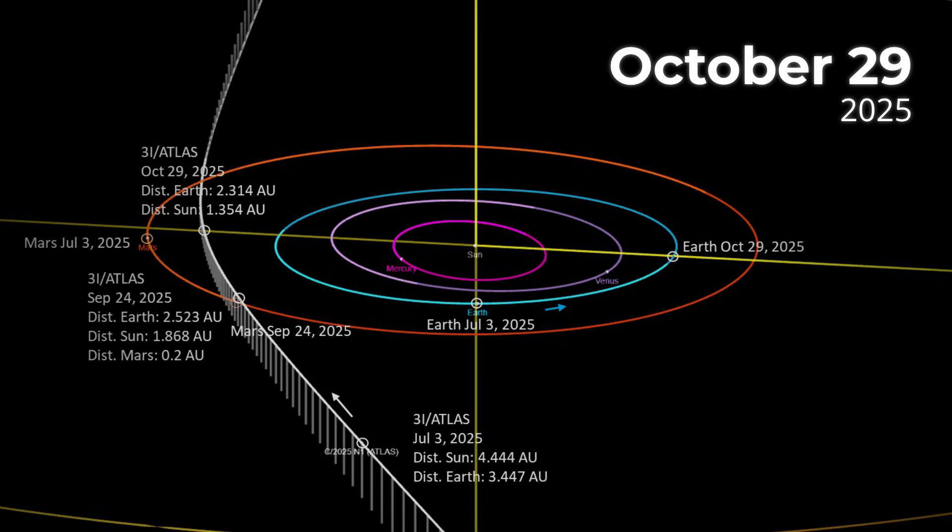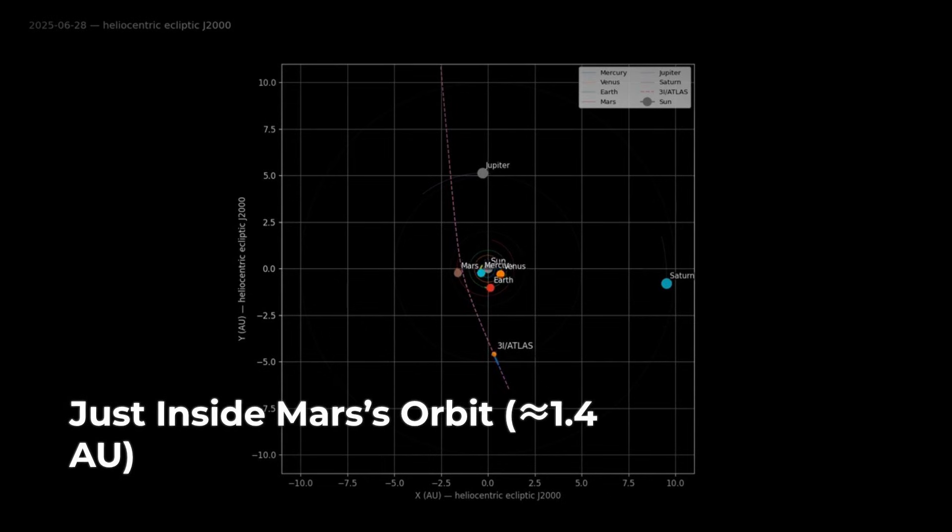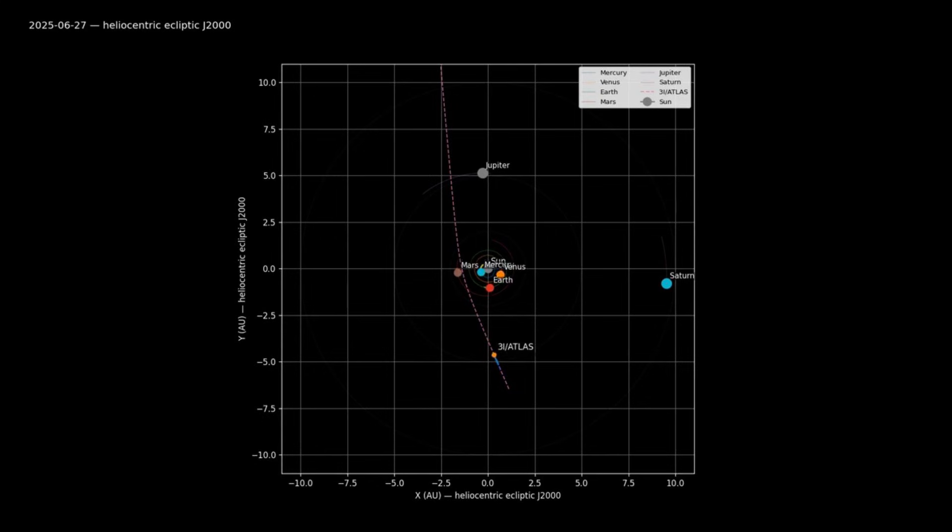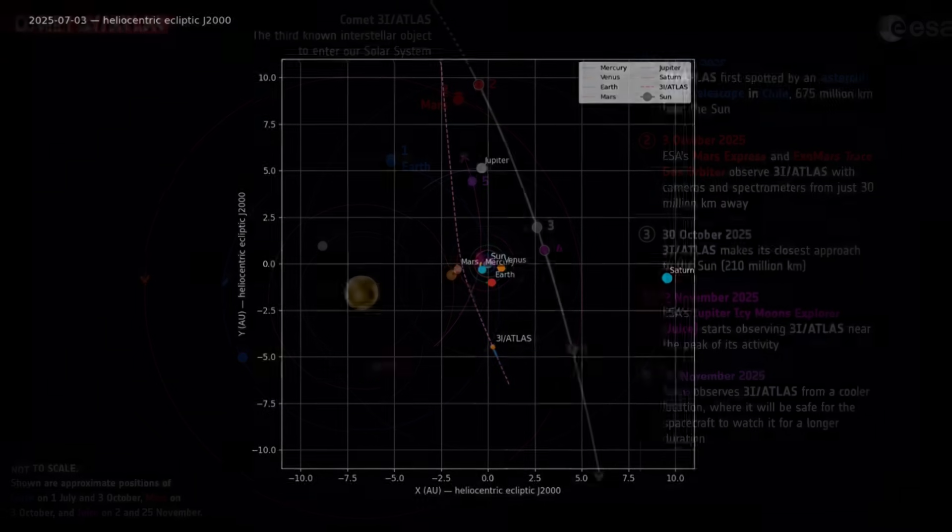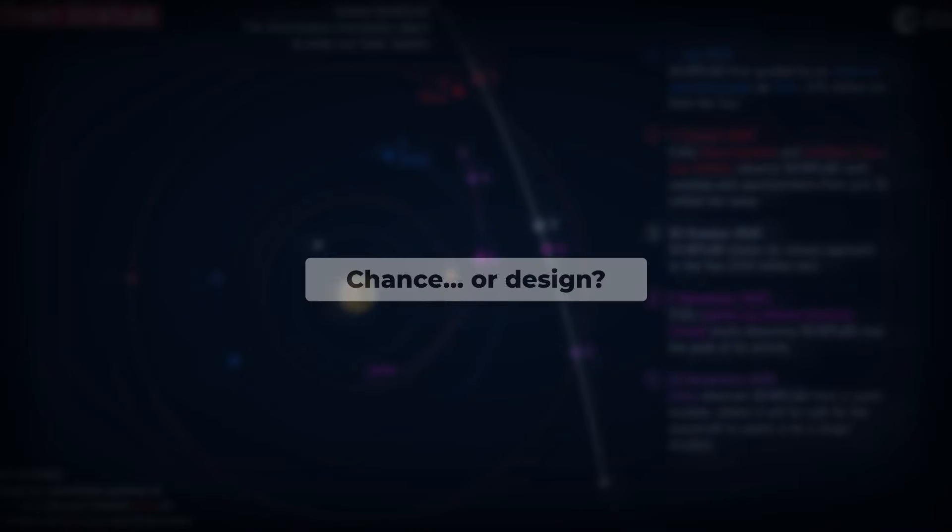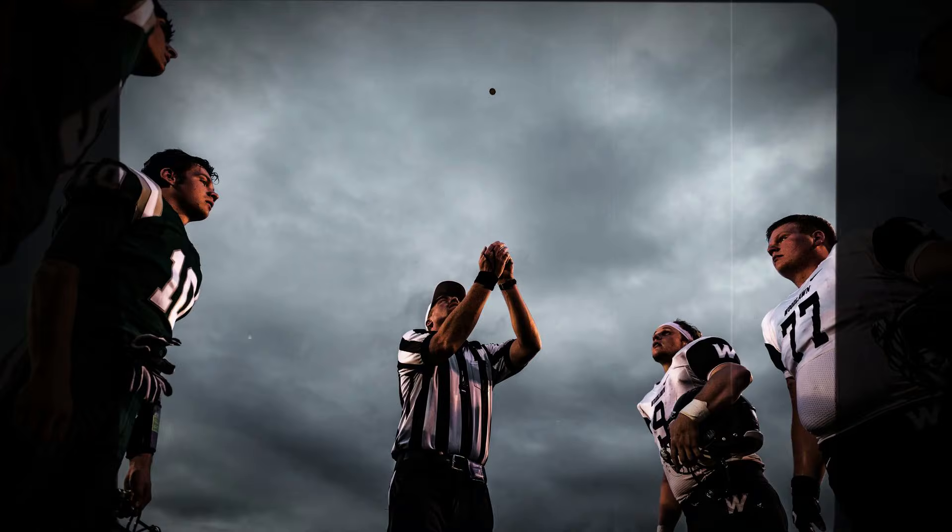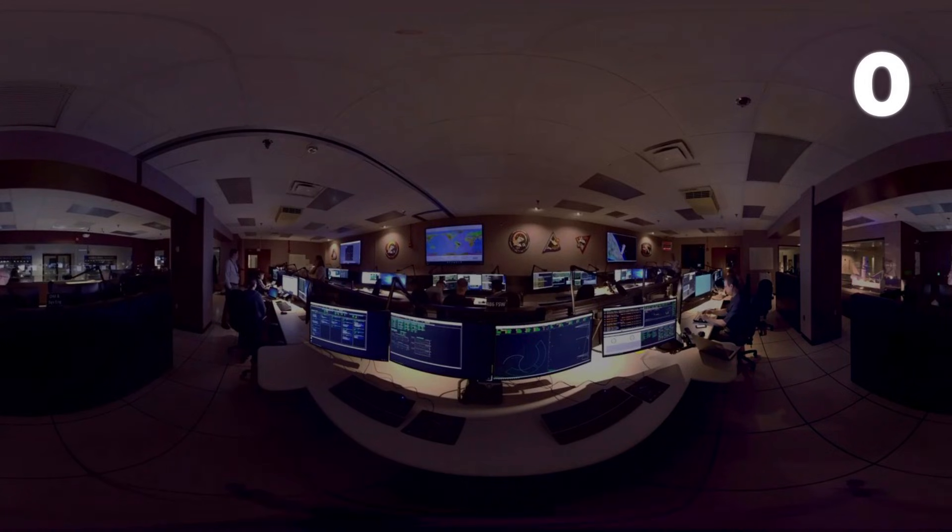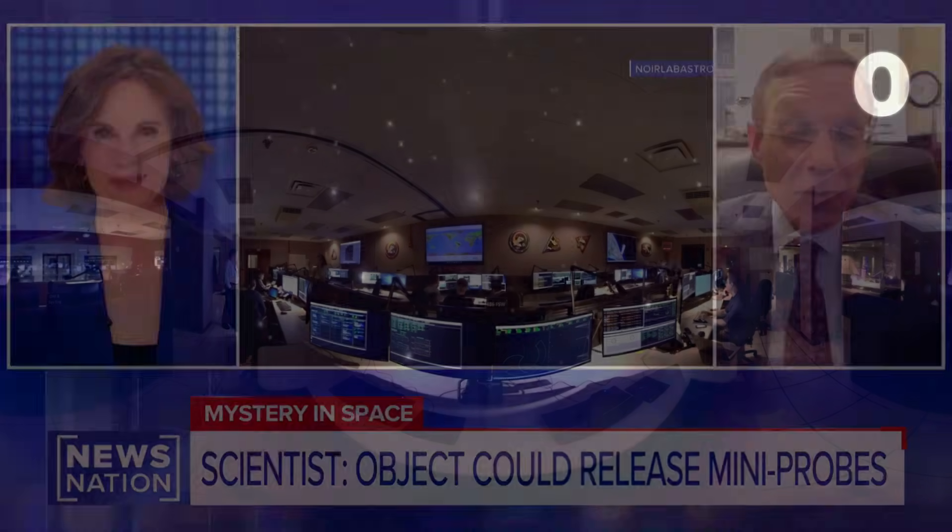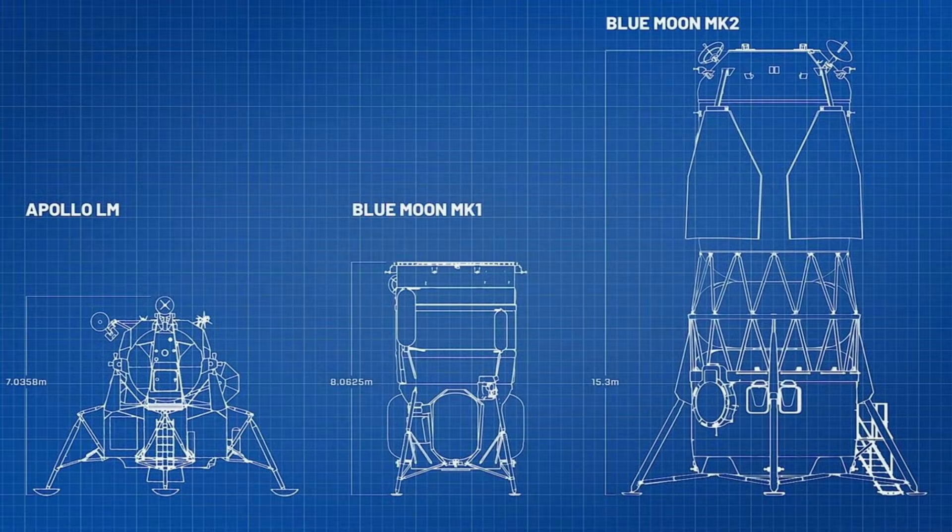Perihelion comes on October 29, 2025, at a distance of 1.36 astronomical units, just inside Mars' orbit. For now, orbital mechanics say it should slingshot past and vanish forever. Yet the trajectory's uncanny alignment with the ecliptic, coupled with its hyperbolic speed, leaves a lingering question. Is this a cosmic fluke, or the signature of intent? As the clock ticks down to perihelion, the stakes rise. If Atlas is natural, it's a rare but explainable visitor. If not, the geometry alone suggests a level of planning, and a purpose, that goes far beyond chance.